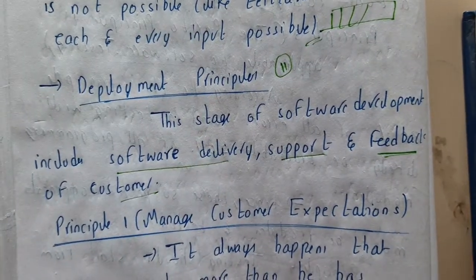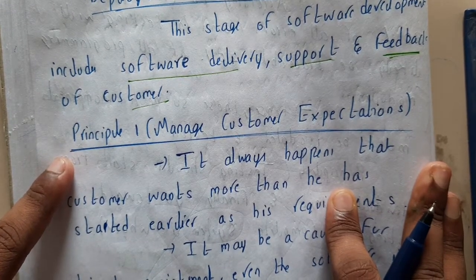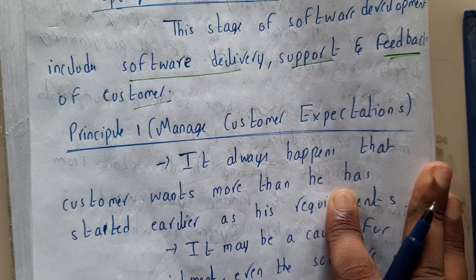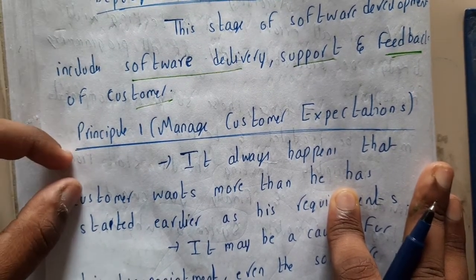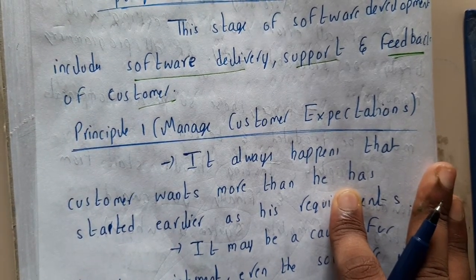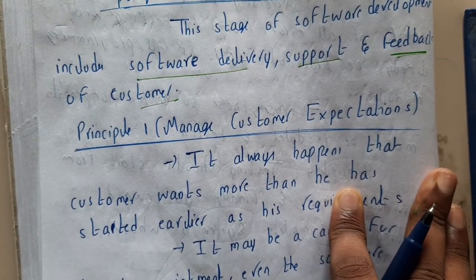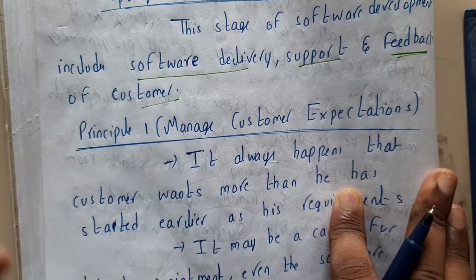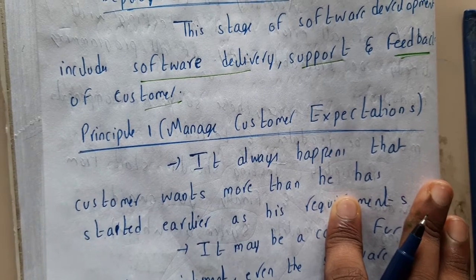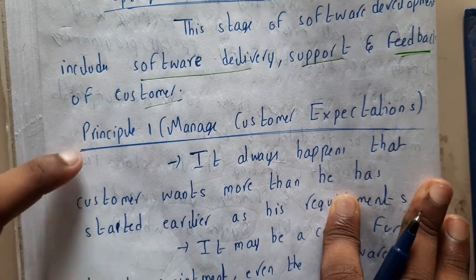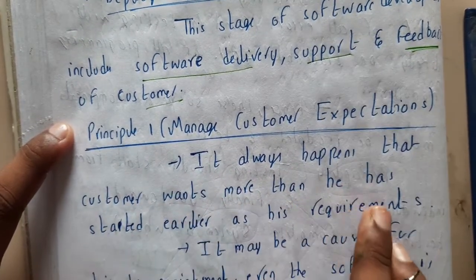The first principle states: manage customer expectations. Every customer will have expectations. For example, if you install a game, you expect to enjoy it. The customer's experience is very valuable because you are the one who made it. You should make sure your product is perfect. It always happens that the customer wants more than he has stated in his requirements.